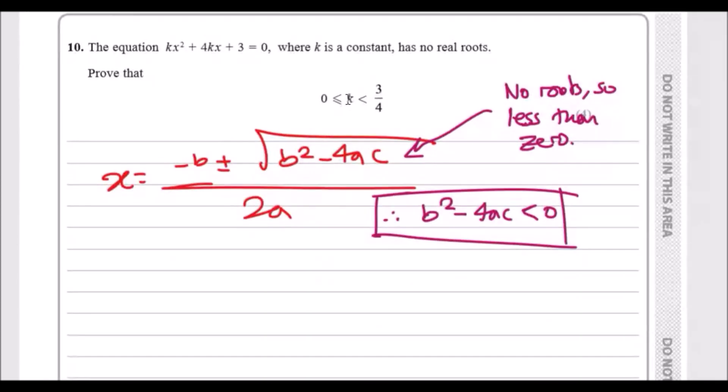Let's move on to question 10. If you guys are enjoying this, give me a like - that helps a lot. The equation kx squared plus 4kx plus 3 equals 0, where k is a constant and has no real roots.